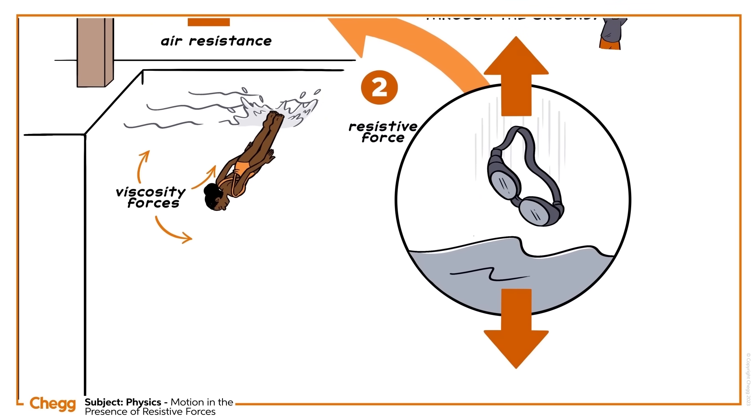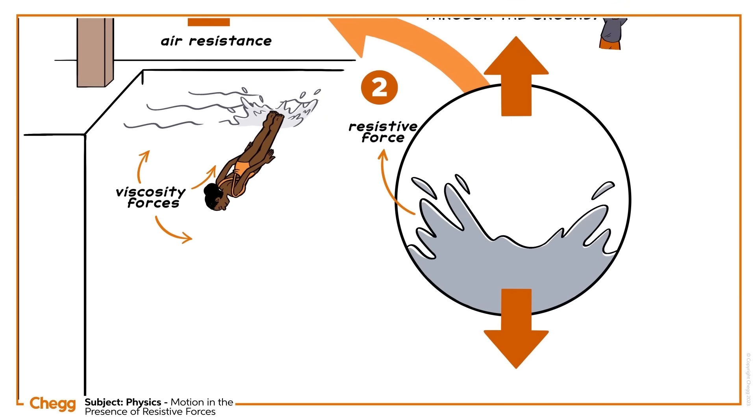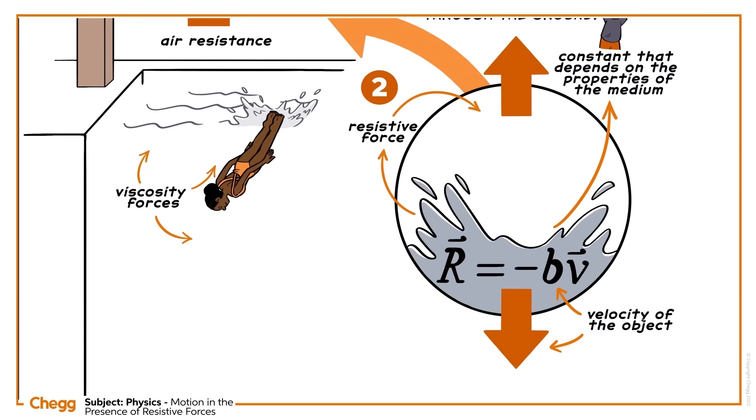With small objects falling slowly through a gas, like air, or a liquid, the resistive force is directly proportional to the velocity of the object, but in the opposite direction. The formula to express this relationship looks like this. Here, R is the resistive force, B is a constant that depends on the properties of the medium, and V is the velocity of the object. The negative sign here shows that the resistive force is opposing the direction of velocity.